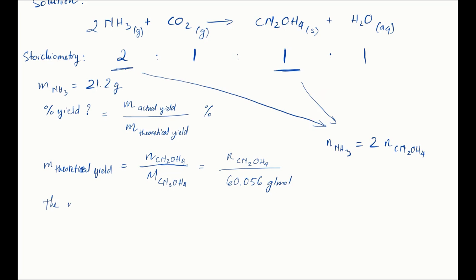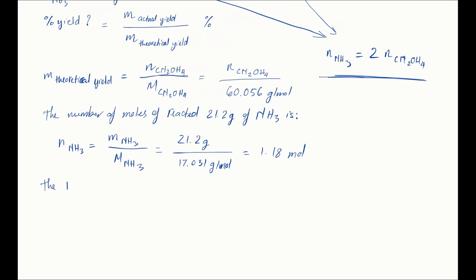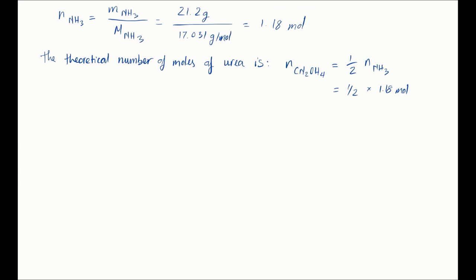So the number of moles of 21.2 grams of ammonia is equal to 1.18 moles. So the theoretical number of moles of urea will be half of that. You can just calculate that into the calculation for the theoretical mass of the urea or that 35.4 grams.